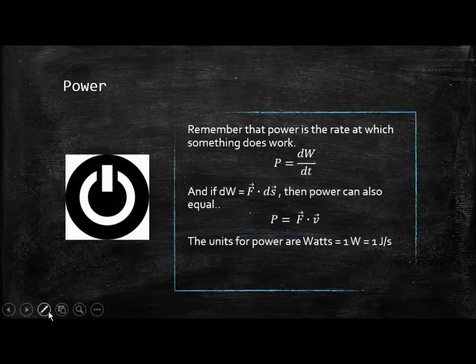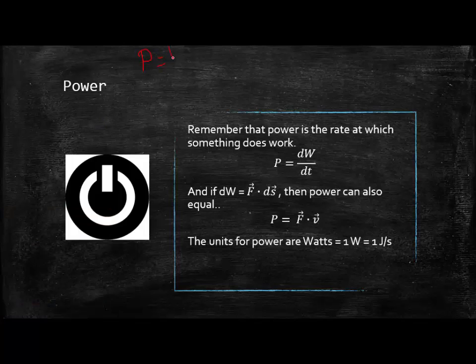Last year we talked about how power was the rate at which something does work. And last year in physics we discussed how power is equal to the work done divided by the time. So the more powerful you were, it meant that you could do more work quicker. In this class, since this class is getting the calculus treatment, we say that power is equal to dW over dt, which is just the derivative of work with respect to time, that will give you power.